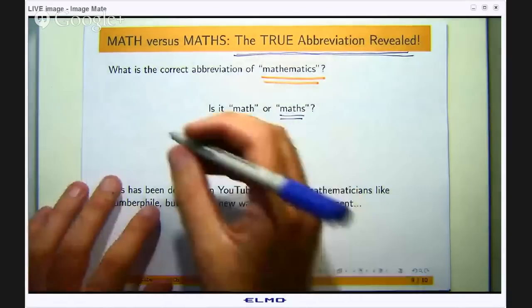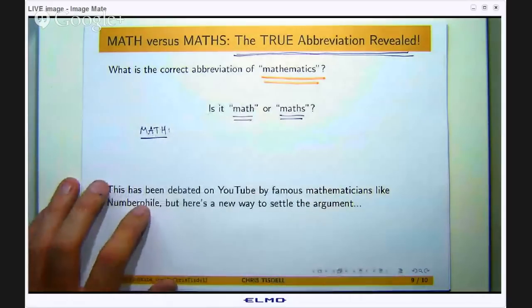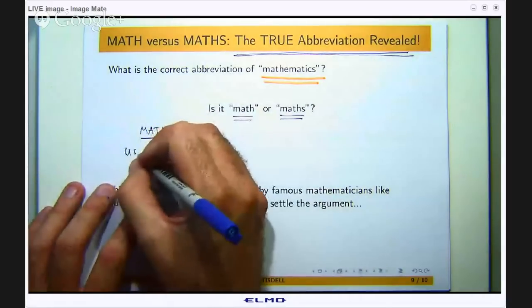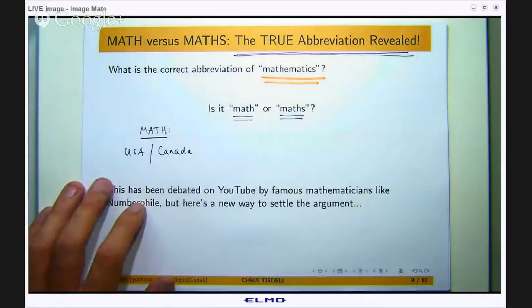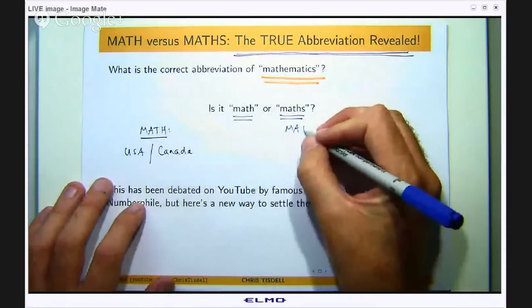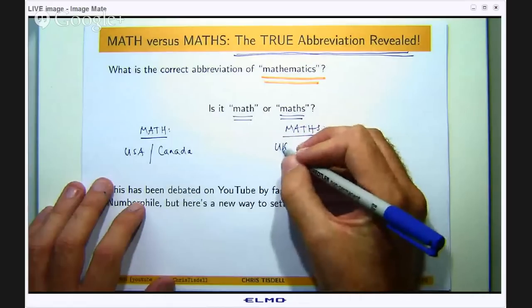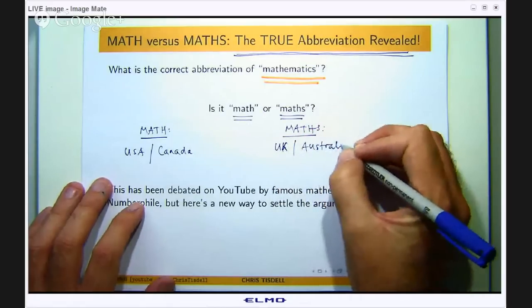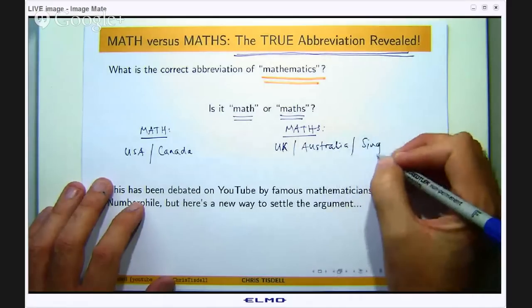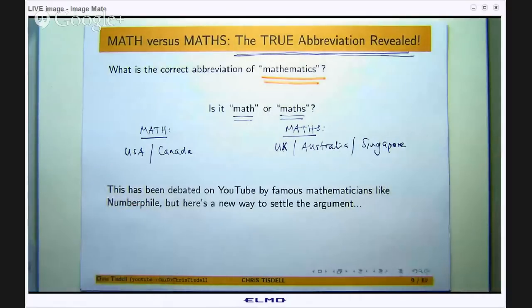So if you say math, you probably come from North America, the USA or Canada. If you say maths, then you may be in the UK or Australia or Singapore, or any other country in the British Commonwealth.